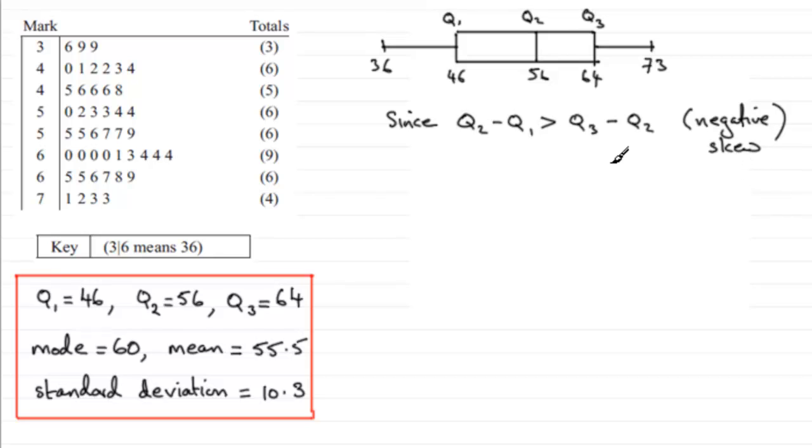Now I did say that there were other ways of measuring skewness. Another way would be to compare the values in this order of the mean to the median to the mode. And what we find here is we can see that the mean is 55.5 and it is less than the median of 56. And the median is less than the mode of 60. So when you've got this situation you've got negative skew.